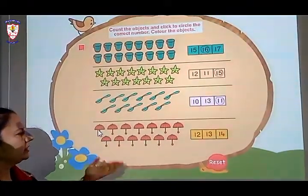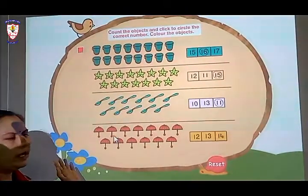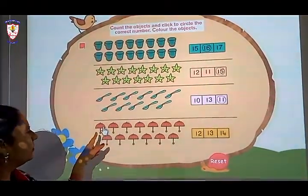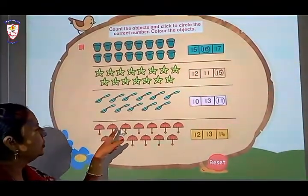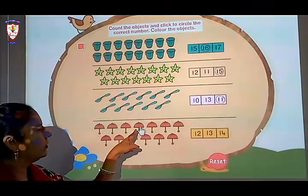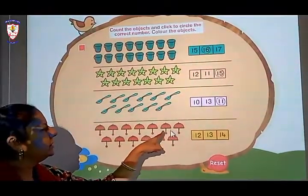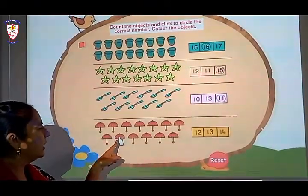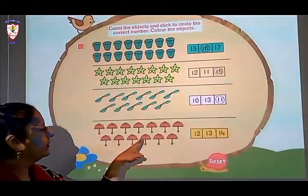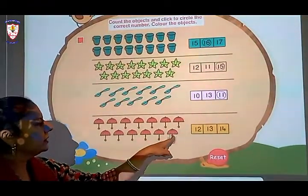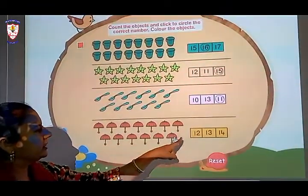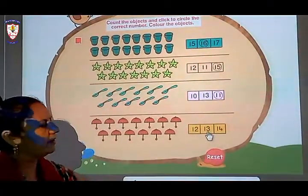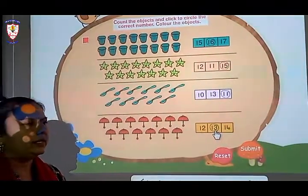Now which picture is this? These all are umbrellas. Let's count how many umbrellas are there. 1, 2, 3, 4, 5, 6, 7, 8, 9, 10, 11, 12, 13. So where is it written number 13? Here it is. We have to circle the number 13.